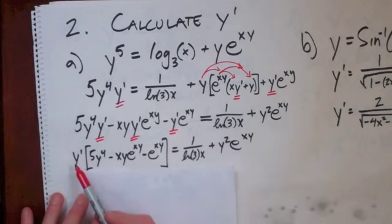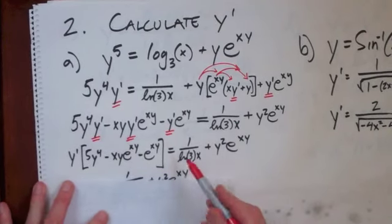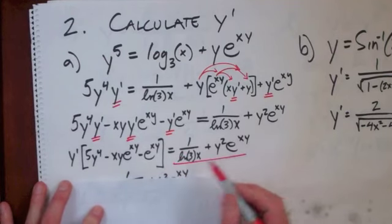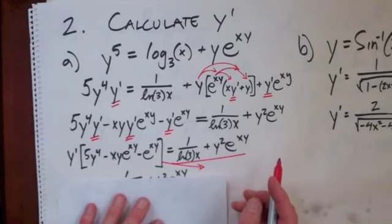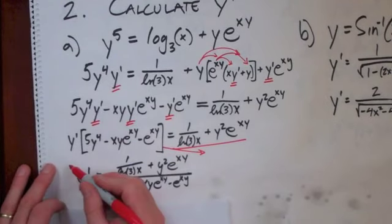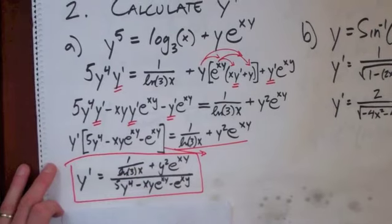So here I've factored out the Y prime, and I'm left with the bracket part. Here's the right-hand side. And now all I'm going to do is just draw a line and put this underneath. On the test, if you do it super carefully and label it, you can save yourself a little bit of time. But here I have recopied it for you. And there it is.